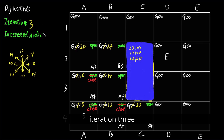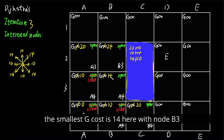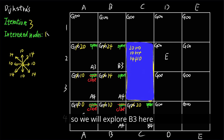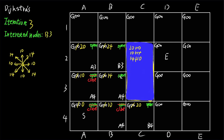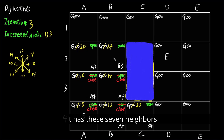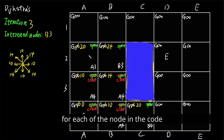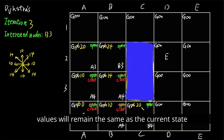Iteration two is finished. In iteration three, the smallest g cost in the open list is 14 at node B3, so we explore B3. We put it into the closed list and check its seven neighbors. All values will remain the same as the current state, so we skip that part in this presentation.